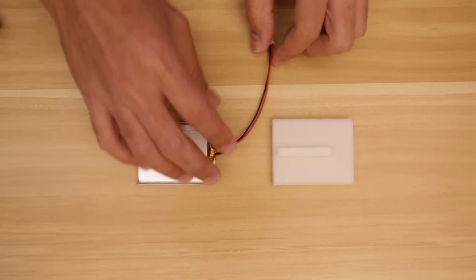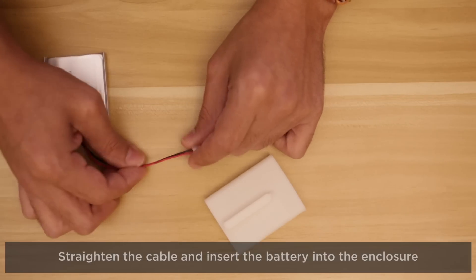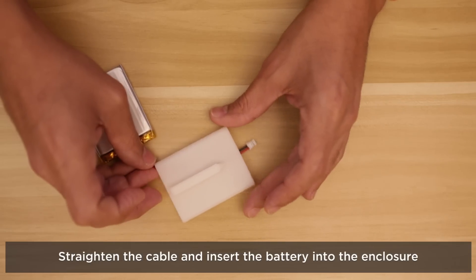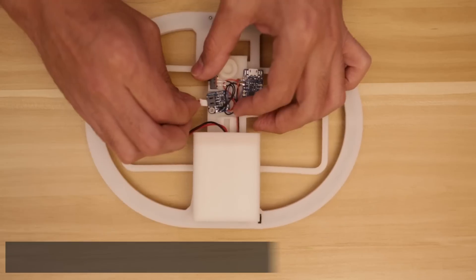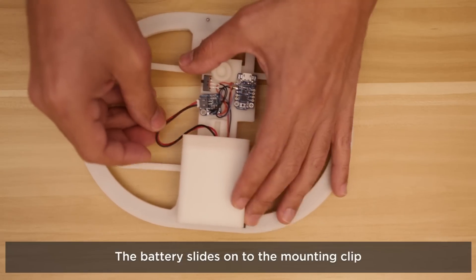Now we can connect the Neopixels to the Adafruit trinket. We'll need to thread the cable from the battery through the holder and then slide in the battery. The T-slot from the battery holder slides into the groove on the back of the housing. Now we can plug in the battery and tuck the cable underneath.